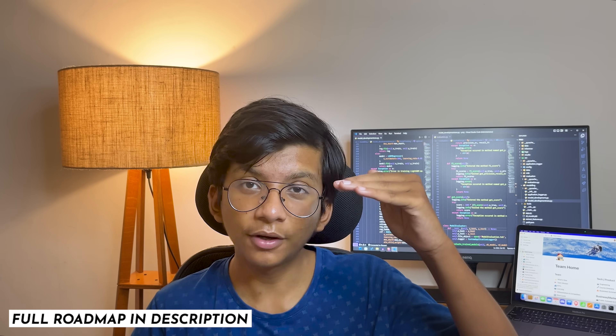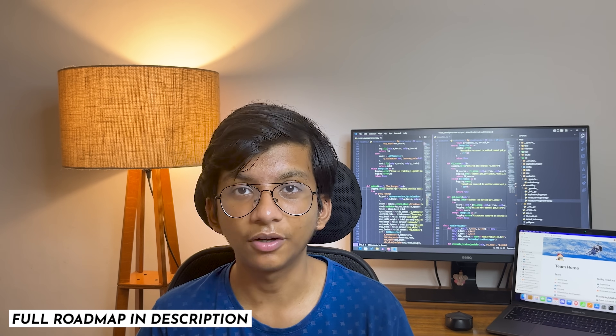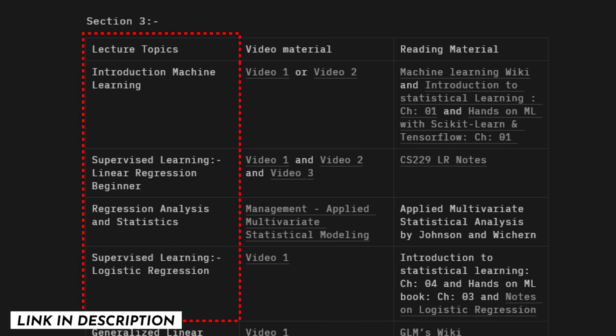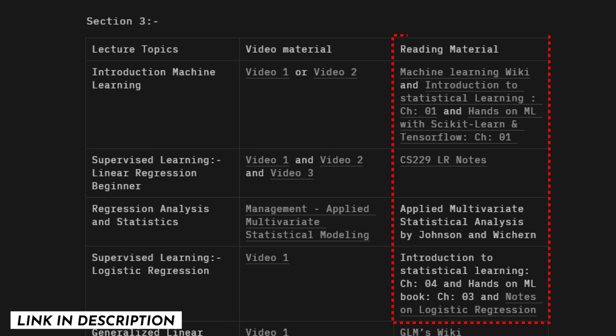Now you're fully ready to get started with machine learning. I recommend following machine learning in three phases: basic or core machine learning, then intermediate machine learning, and then advanced machine learning. I've listed the topics for every phase in the Notion page, which includes suggested reading materials, recommended books with specific page numbers, and the best videos to follow.